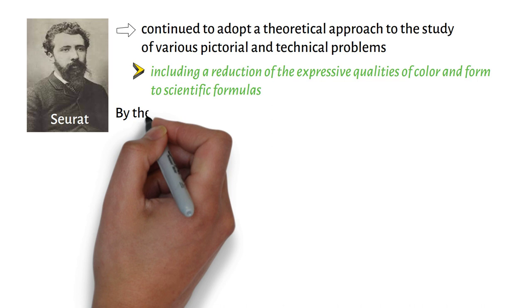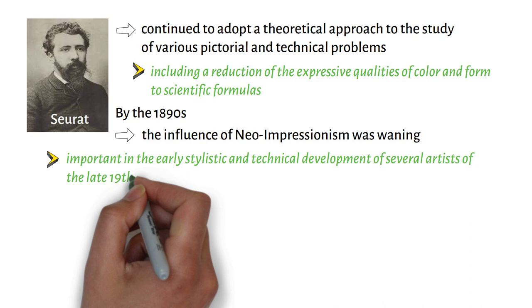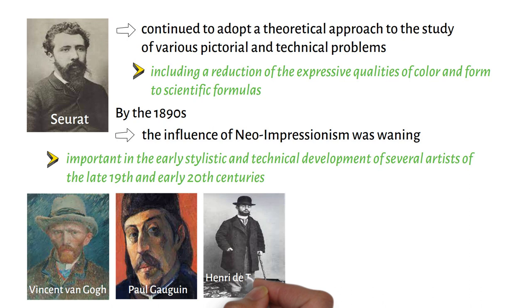By the 1890s, the influence of Neo-Impressionism was waning, but it was important in the early stylistic and technical development of several artists of the late 19th and early 20th centuries, including Vincent van Gogh, Paul Gauguin, Henri de Toulouse-Lautrec, and Henri Matisse.